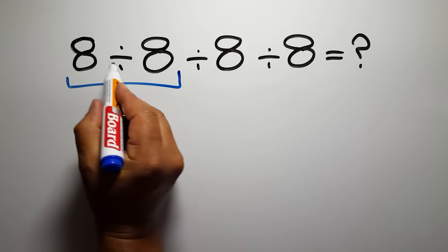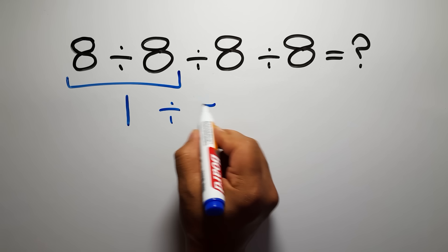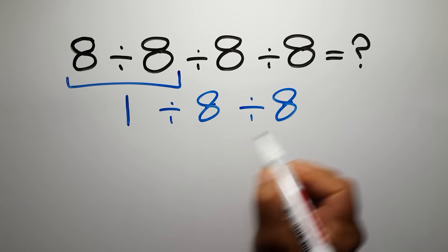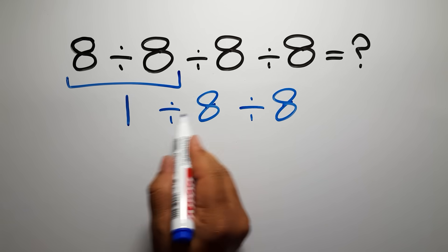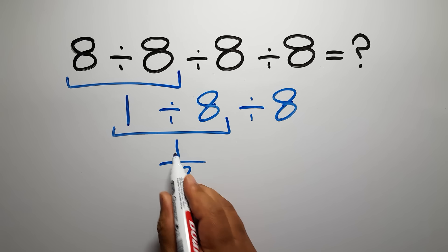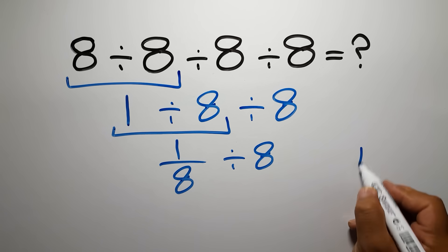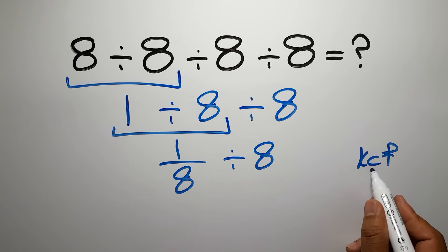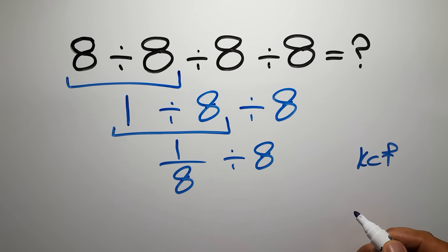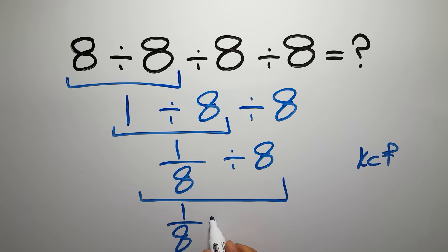So first this division, then this division, and finally this division. 8 divided by 8 gives us 1, so we have 1 divided by 8, and again divided by 8. 1 divided by 8 can be written as 1 over 8, so we have 1 over 8 divided by 8. According to the KCF rule — K stands for Keep, C stands for Change, and F stands for Flip — we keep the first fraction, change division to multiplication, and flip the second fraction.